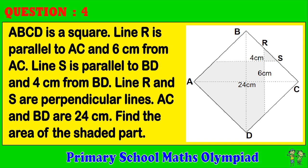Question 4. ABCD is a square. Line R is parallel to AC and 6 cm from AC. Line S is parallel to BD and 4 cm from BD. Line R and S are perpendicular lines. AC and BD are 24 cm. Find the area of the shaded part.